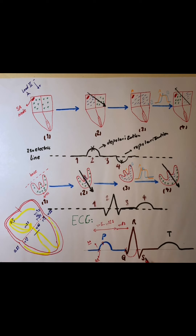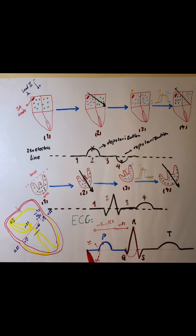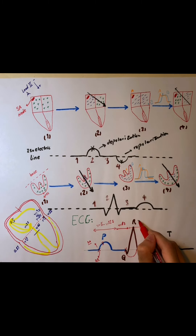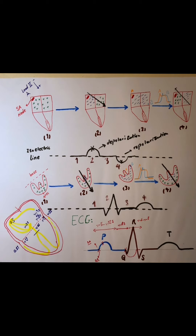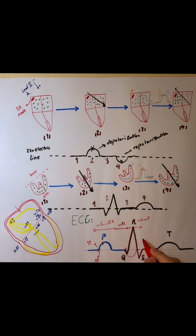The QRS complex is the depolarization wave of our ventricles in stage 2. It takes around 0.06 to 0.08 seconds for all the ventricles to be depolarized, so that's the duration of the QRS complex. The ST segment is the third stage where our ventricles are all depolarized and remain depolarized. The ST segment duration is equal to the PQ interval on the electrocardiogram, around 0.15 to 0.16 seconds.